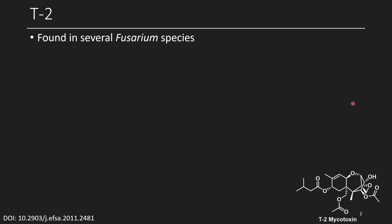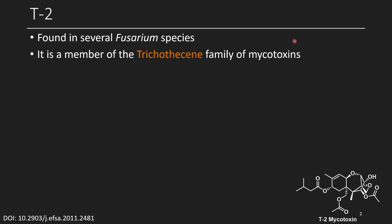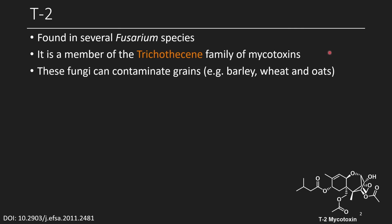The first one we're going to talk about is called T2, sometimes referred to as T2 mycotoxin. This mycotoxin is found in several Fusarium species, and it's a member of the Trichothecine family of mycotoxins.